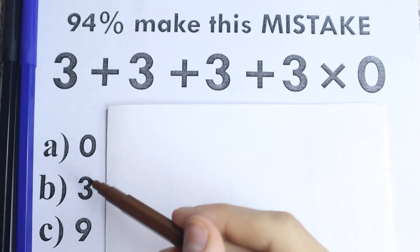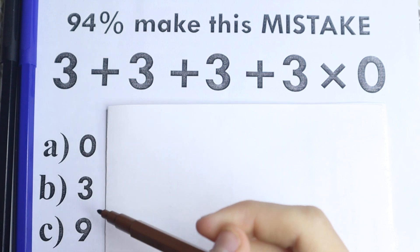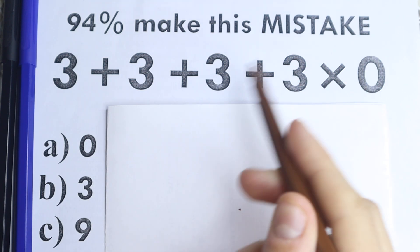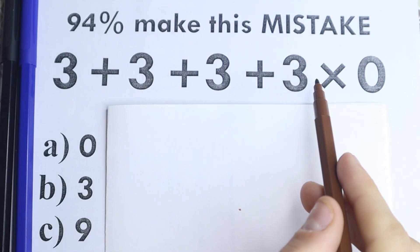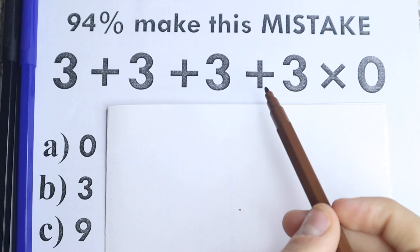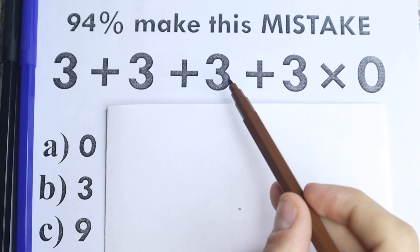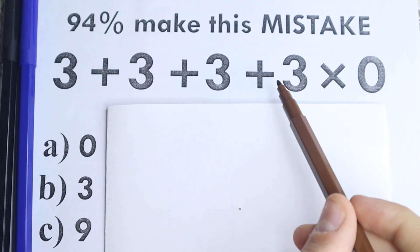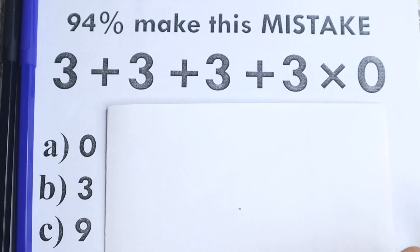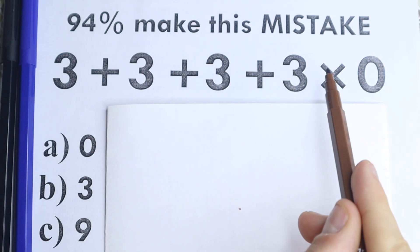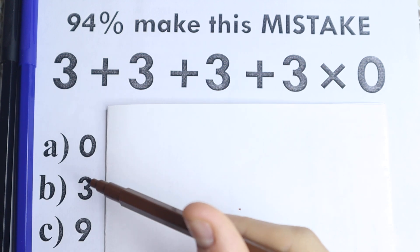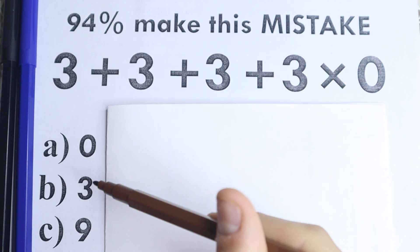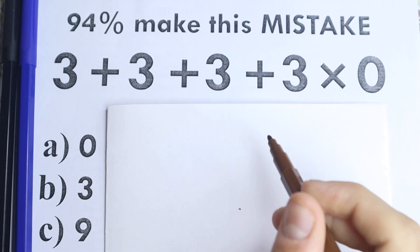Right here we have three options: A, B, and C. So here is our question — what is the correct answer? Because this is a very simple question. Everyone learned addition and multiplication in the third grade, so everyone knows about this operation. But what about the correct answer? 0, 3, or 9?